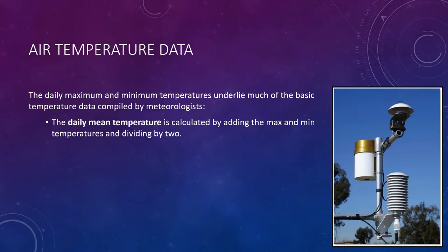People probably notice changes in air temperature more often than they notice changes in any other element of weather. At a weather station, the temperature is monitored on a regular basis from instruments mounted in an instrument shelter. The shelter protects the instrument from direct sunlight and allows a free flow of air. The daily maximum and minimum temperatures underlie much of the basic temperature data compiled by meteorologists. By adding the maximum and minimum temperatures and then dividing by 2, the daily mean temperature is calculated.